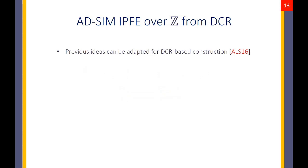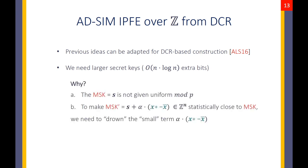The same proof strategy can be applied to the DCR-based construction of ALS16 to achieve adaptive simulation security, but we need to slightly increase the key sizes for the proof to work. The reason is that the master secret key in this construction cannot be given uniformly modulo an integer, so the shifted distribution will not be identical to the initial one. To make the statistical distance between these two distributions negligible, we need to drown the small shift term.